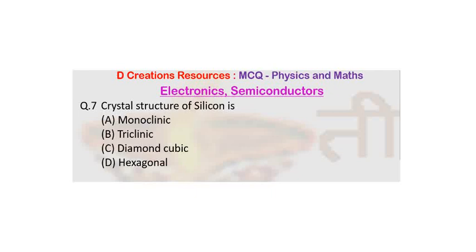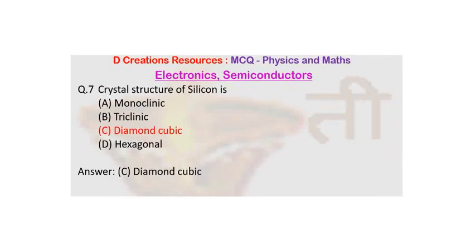And in fact that happens to be the correct answer in this case. The answer is diamond cubic. So silicon crystallizes in that.